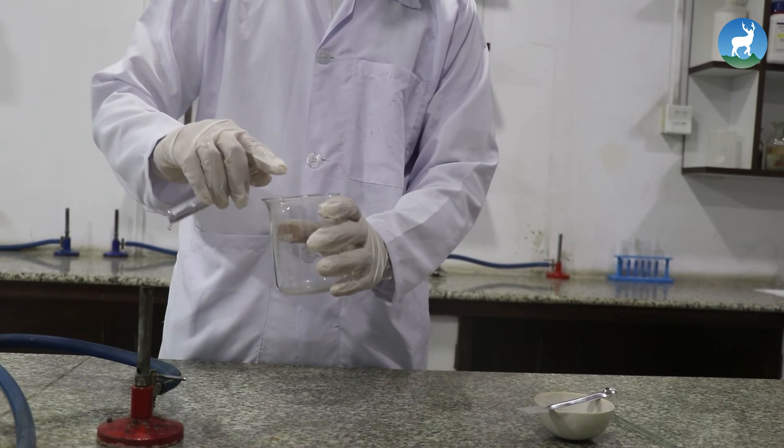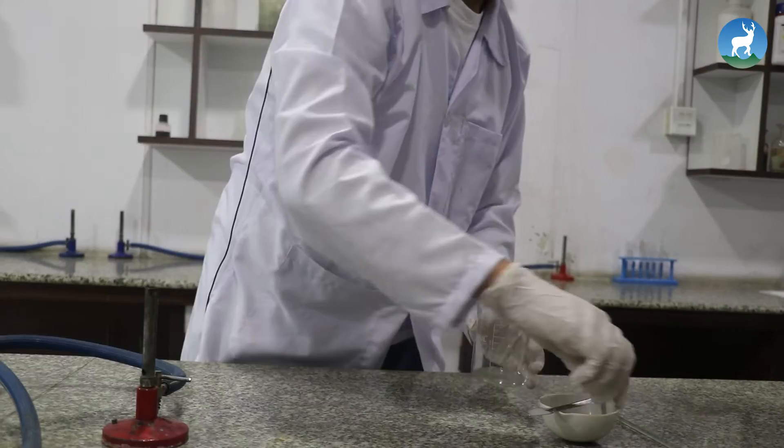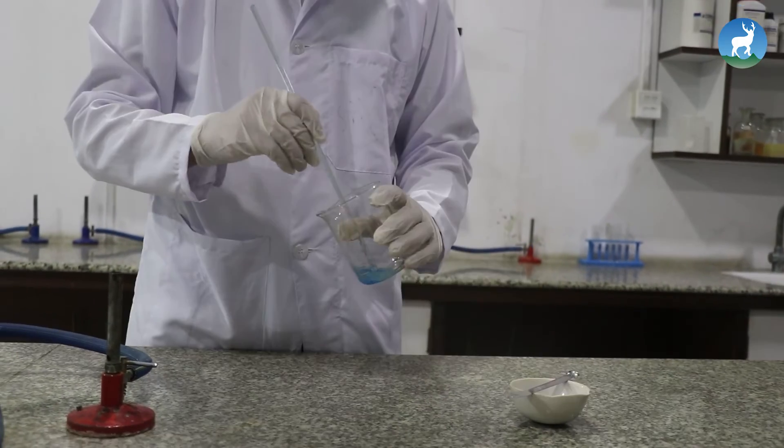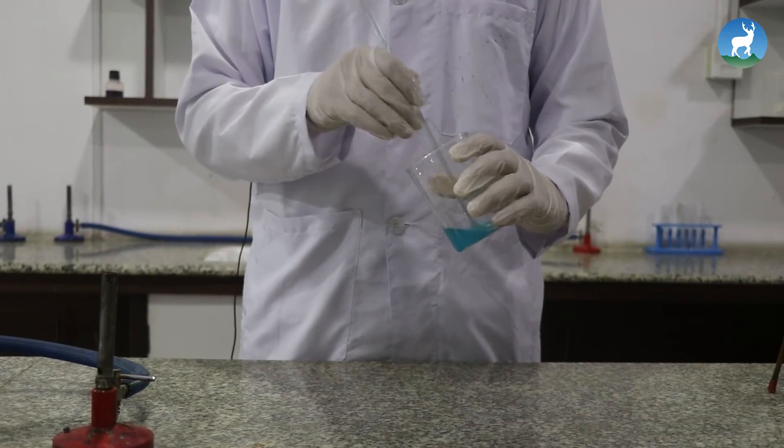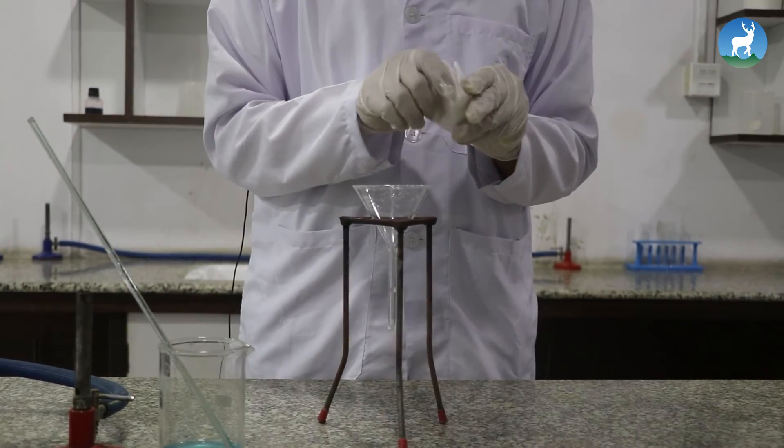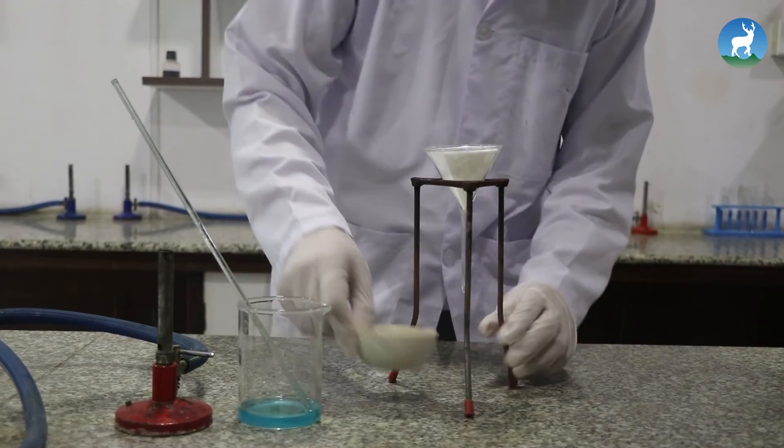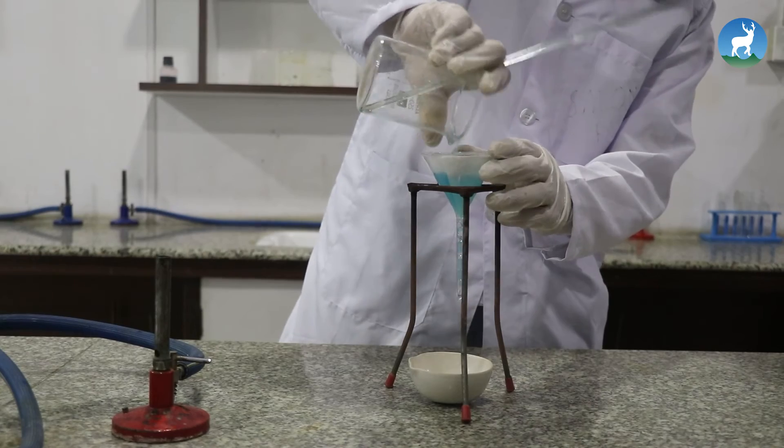Put about half test tube full of water in a beaker. Add small quantity of impure copper sulfate and stir it. Repeat adding copper sulfate and stir it to form a saturated solution. Filter out the solution and collect the filtrate in a dry porcelain basin.